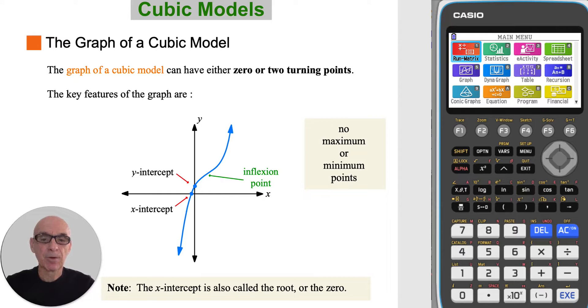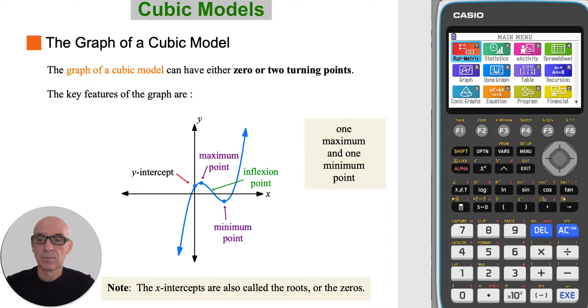This cubic model has no maximum or minimum points, whilst this one has one maximum and one minimum point. Note also that this cubic model has three x-intercepts. The x-intercepts are also called the roots, or the zeros.